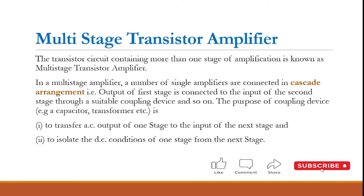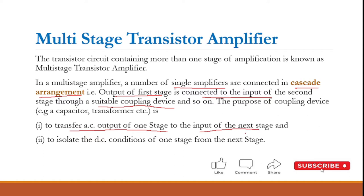The resulting system is referred to as a multistage transistor amplifier. In a multistage transistor amplifier, a number of single amplifiers are connected in a cascade arrangement. Cascade arrangement means the output of the first is connected to the input of the second, then the output of the second is connected to the input of the third, and so on — connected through suitable coupling devices. The purpose of coupling devices is to transfer the AC output from one stage to the input of the next stage, and also to isolate the DC conditions from one stage to the next.